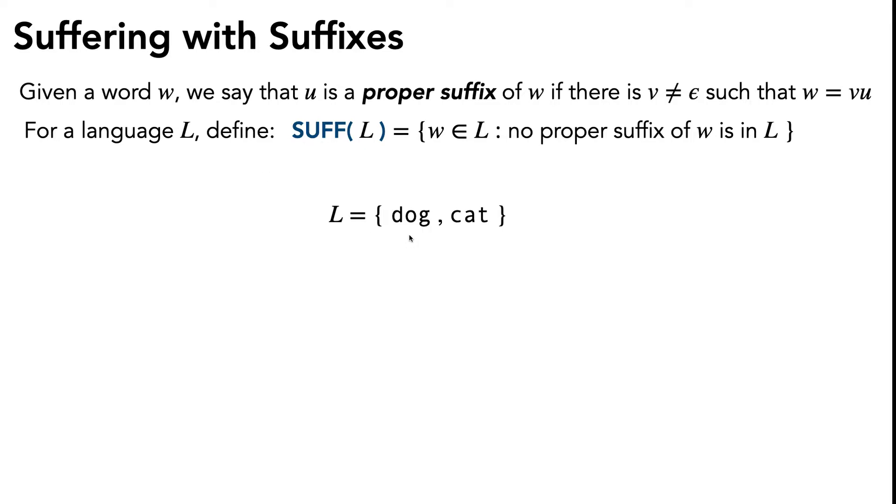Let's say L equals the language {dog, cat}. What would SUFF(L) be? It would also be {dog, cat}. This is because the string dog doesn't have any proper suffixes of it in L, and neither does the string cat, so both of them can be in SUFF(L).